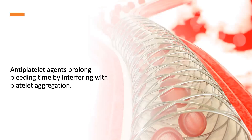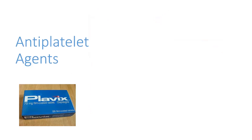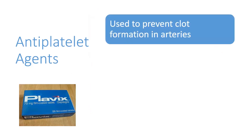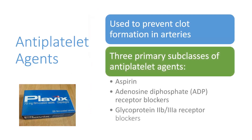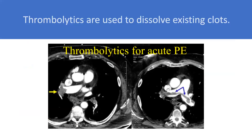Antiplatelet agents prolong bleeding time by interfering with platelet aggregation. For example, Plavix (clopidogrel) is used to prevent clot formation in arteries. Three primary subclasses are: aspirin, adenosine diphosphate (ADP) receptor blockers, and glycoprotein 2B/3A receptor blockers.